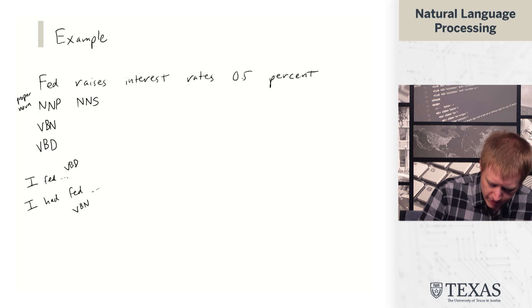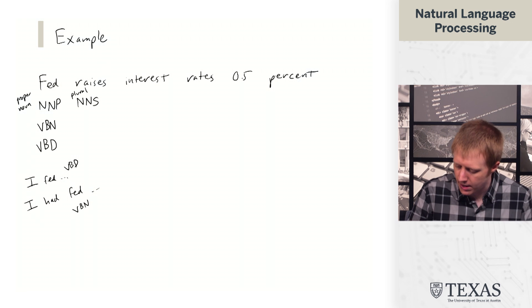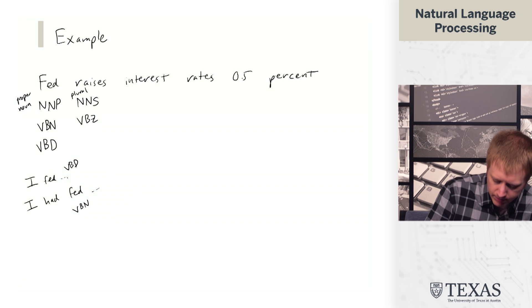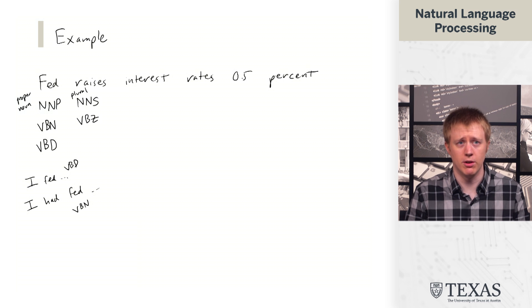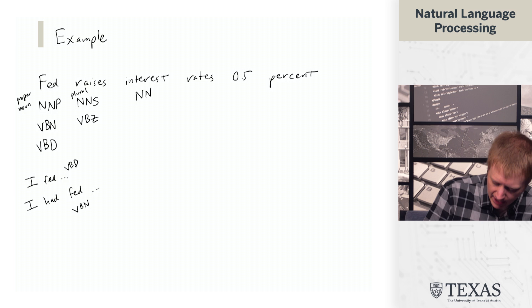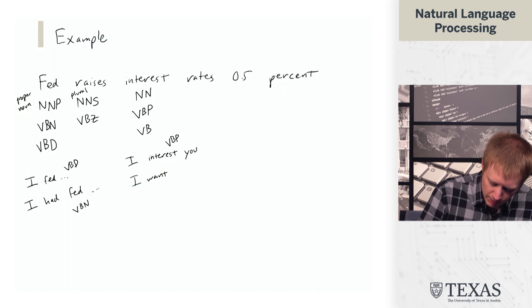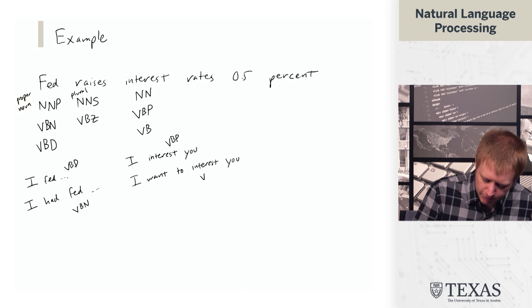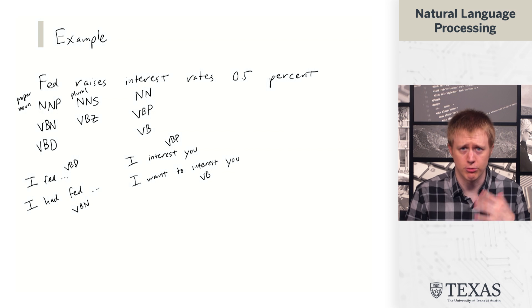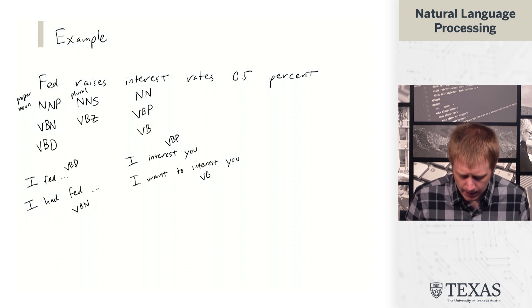Raises—this is a plural noun, that's what NNS means. But the other possibility is it can be a verb, like he raises up his hand. Interest—again, this can be a noun or two different types of verbs. For example, I interest you in NLP, hopefully, that's a VBP. Or, I want to interest you—this is the infinitive form of the verb, the bare VB here.